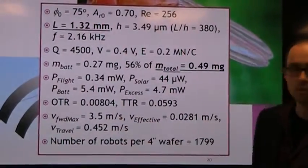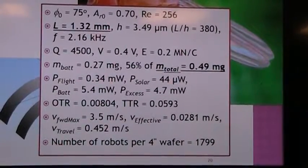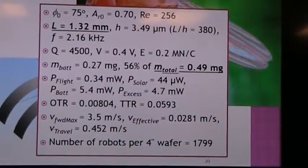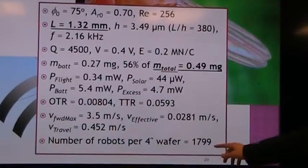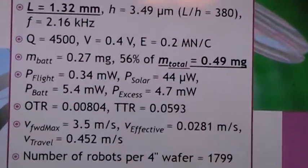3.5 meters a second, but the travel velocity, the average velocity over long periods of time, only half a meter per second. You can get 1,800 robots from a single 4-inch wafer with this design, though.